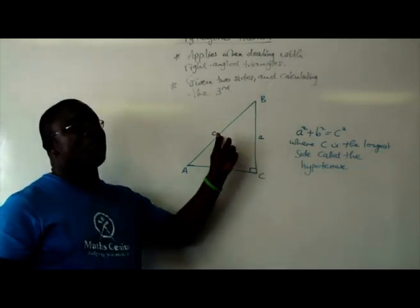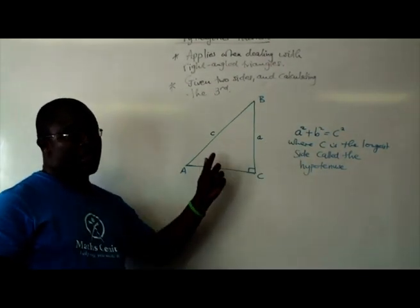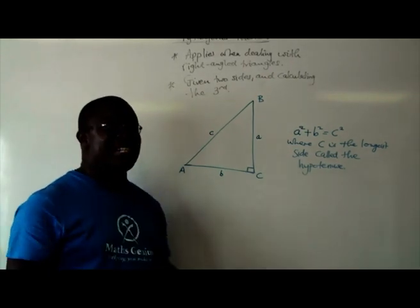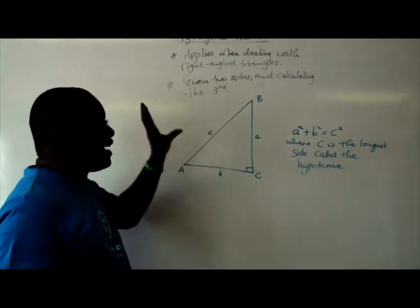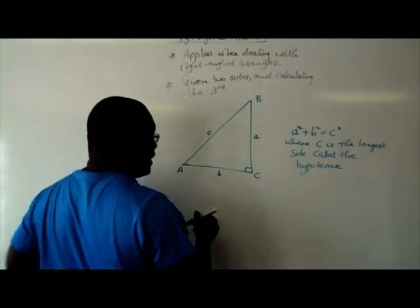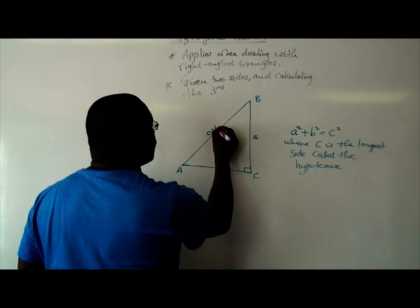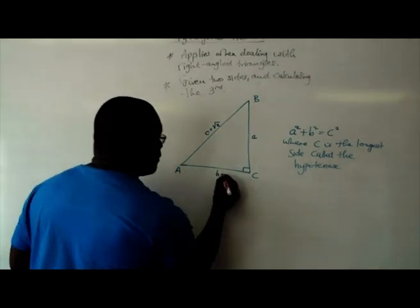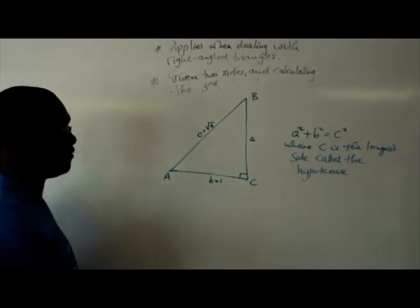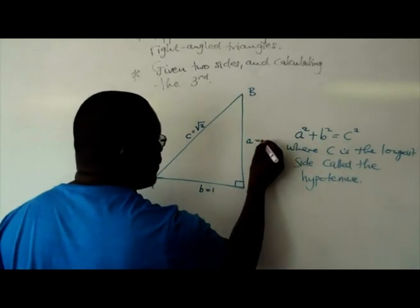So given two sides, you should be able to calculate the third. And also remember that this only applies when you're dealing with right angled triangles. So assuming that c is equal to √2 and b is equal to 1. What is the value of a?